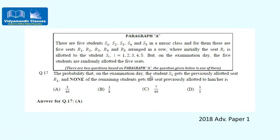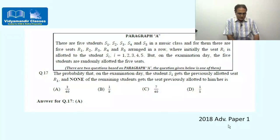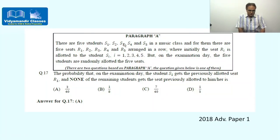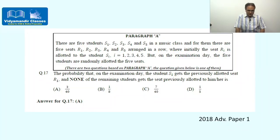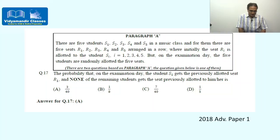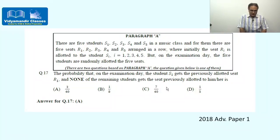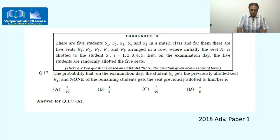The first question is from 2018 Advanced paper. It says there are five students S1, S2, S3, S4, S5 in a music class and for them there are five seats R1, R2, R3, R4, R5 arranged in a row, where initially seat Ri is allotted to student Si. But on examination day the five students are randomly allotted the five seats. What is the probability that student S1 gets the previously allotted seat R1 and none of the remaining students get the seat previously allotted to them?